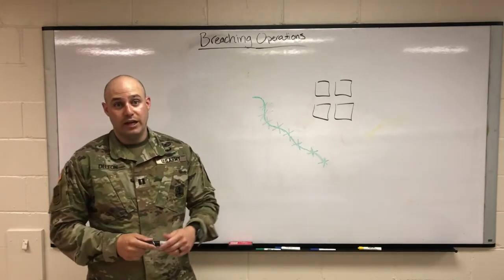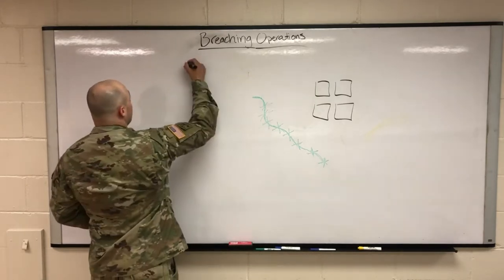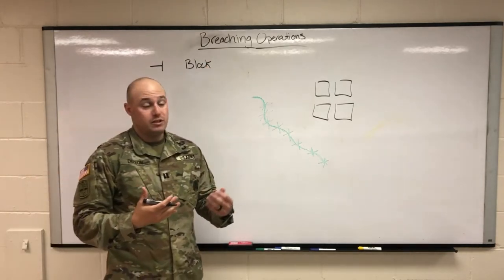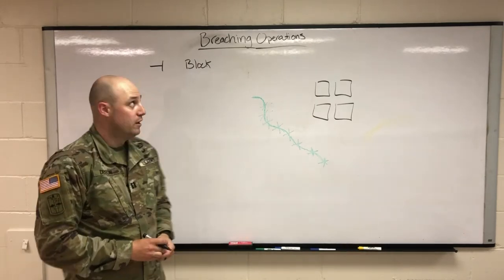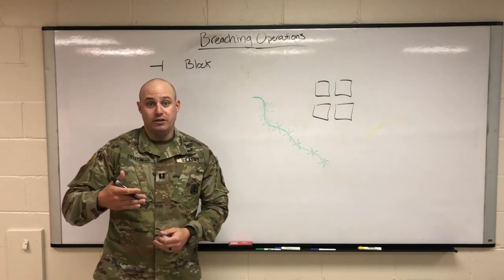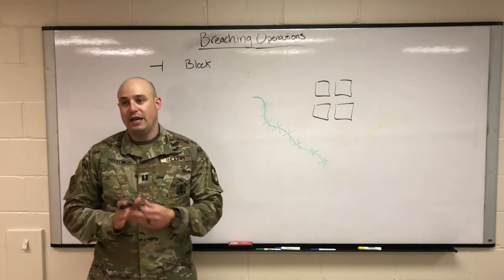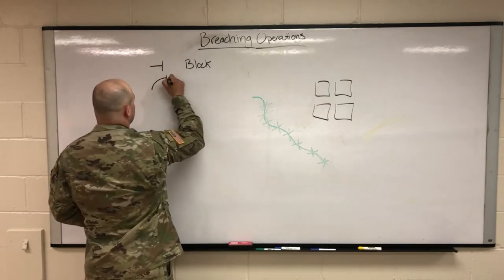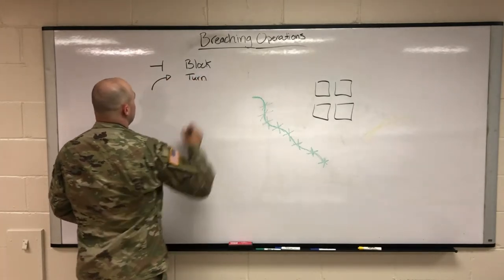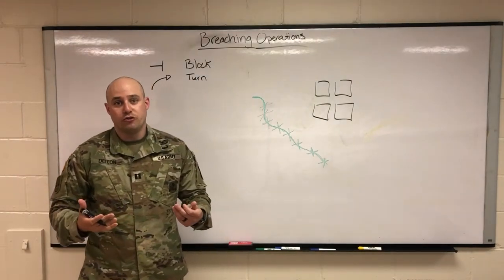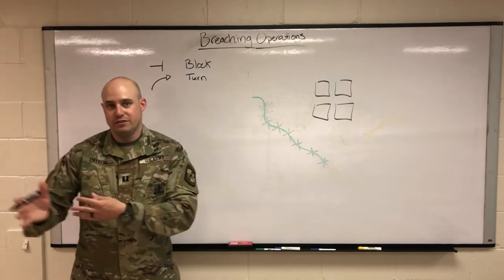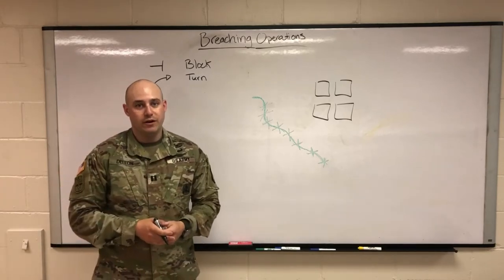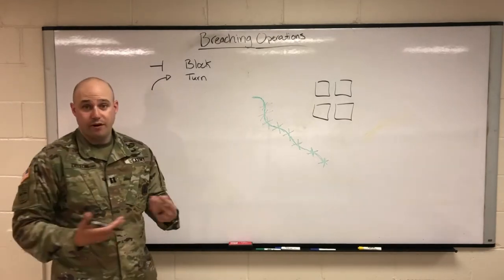Let's talk about the four types of obstacles we'll likely encounter. The first is a blocking obstacle. The symbology is typically green. A blocking obstacle simply makes you stop in place and makes a route impassable — you cannot go that direction. The second is a turning obstacle, which essentially tries to turn you a certain way. Since obstacles are meant to funnel us into an engagement area, if we're moving South and the enemy wants to move us North into an engagement area, a turning obstacle can be very effective.